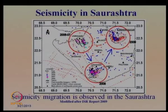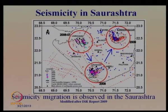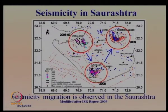We also saw in the previous lecture how seismicity migrates from one region to another. Taking the example of Saurashtra region: from 2006 to 2007, earthquakes occurred in the Jamnagar area, then shifted to clustering in the Junagadh area, then migrated to Surendranagar area over 2008 and 2009. This migration of seismic events from one place to another within a region must also be considered in any seismic study.